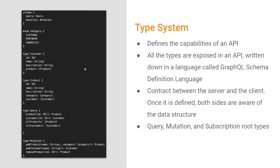What you see on the left side of the slide is a type system — the type system of the products management GraphQL API. Each GraphQL API would have a type system similar to this. Basically, this defines the capabilities of an API. All the types exposed in an API are written in the GraphQL Schema Definition Language. It's like a contract between the client and the server, and once it is defined, both sides are aware of its data structure. There are some special root type elements: query, mutation, and subscription.